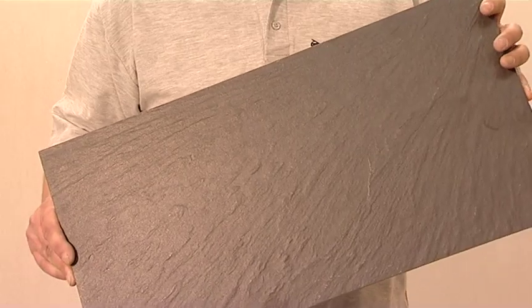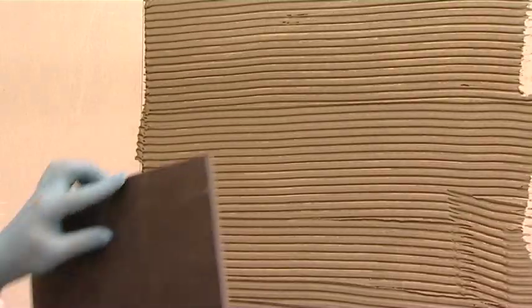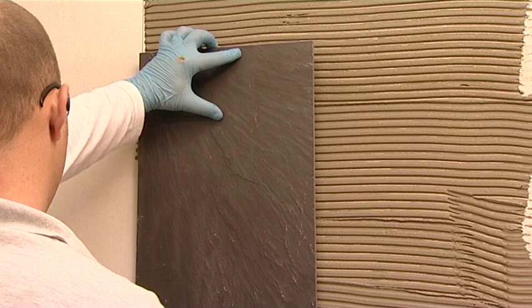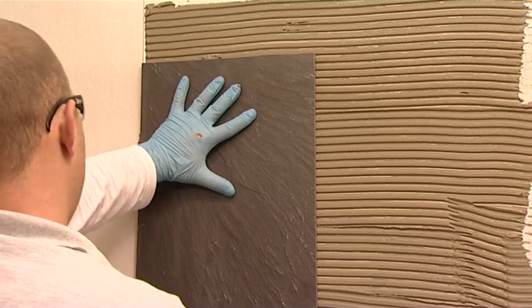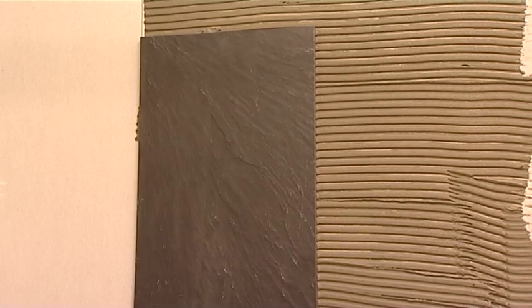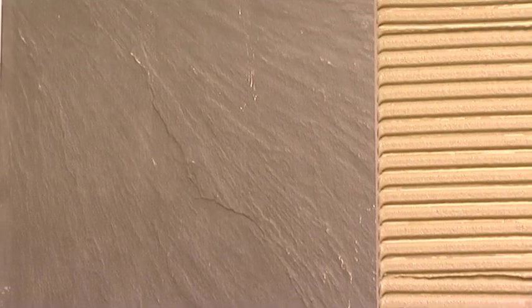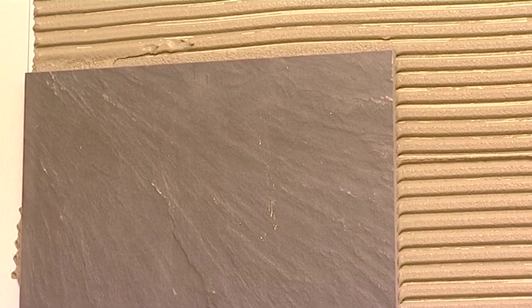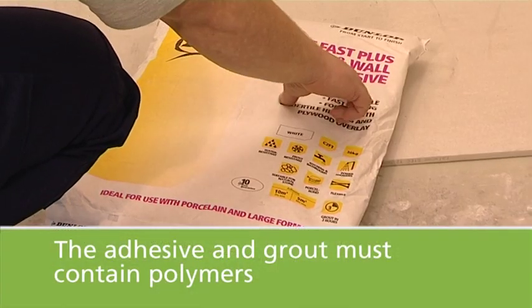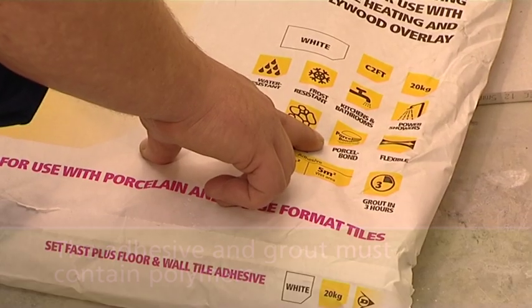Full-bodied porcelain tiles can be recognized by the fact that they are the same color throughout the depth of the tile. By definition, these tiles have virtually no water absorption, 0.5% or less. When working with fully vitrified tiles, both the adhesive and the grout must contain polymers to ensure the correct level of adhesion strength is achieved with the tile.